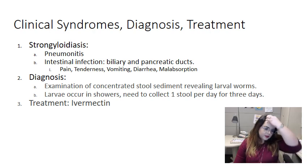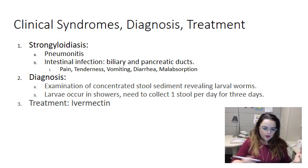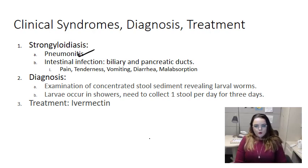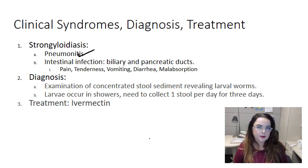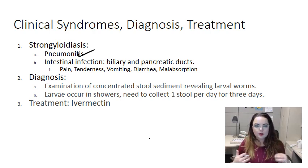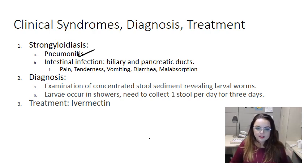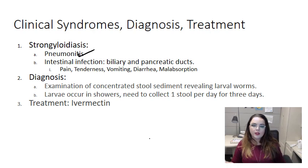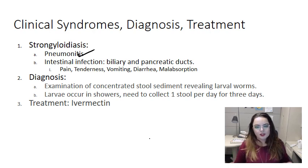The syndrome is known as strongyloidiasis. In this case, we are worried about pneumonitis, because remember, it has that pulmonary course. If you have an intestinal infection, it's often asymptomatic, but patients with a very high worm burden can have some biliary and pancreatic duct damage, or they can have problems in the small intestine or colon, where there's inflammation, ulceration, and epigastric pain.